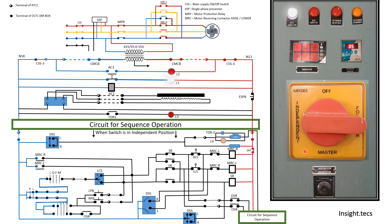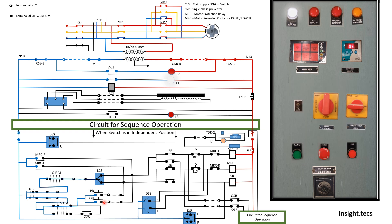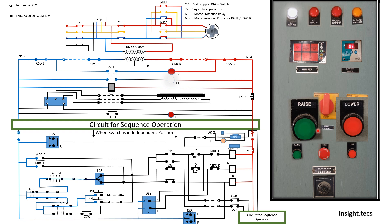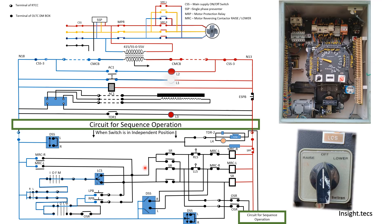In both cases — local or remote — the power moves to the sequence selector switch, which indicates either independent, master, or follower. Choosing independent mode, the power moves further. If operating in remote mode through the RTCC panel, there are two push buttons — raise and lower. Push the green button to raise and the red button to lower. In the DM box, the LCS switch also provides raise or lower selection locally.